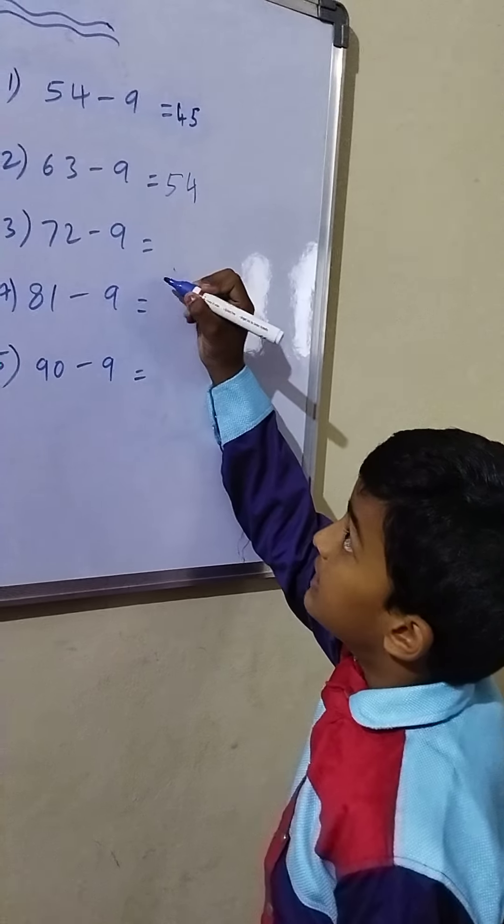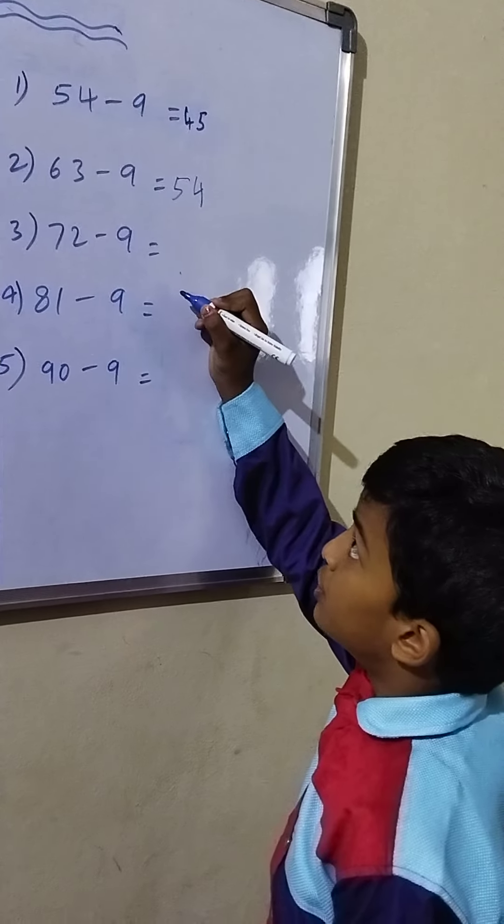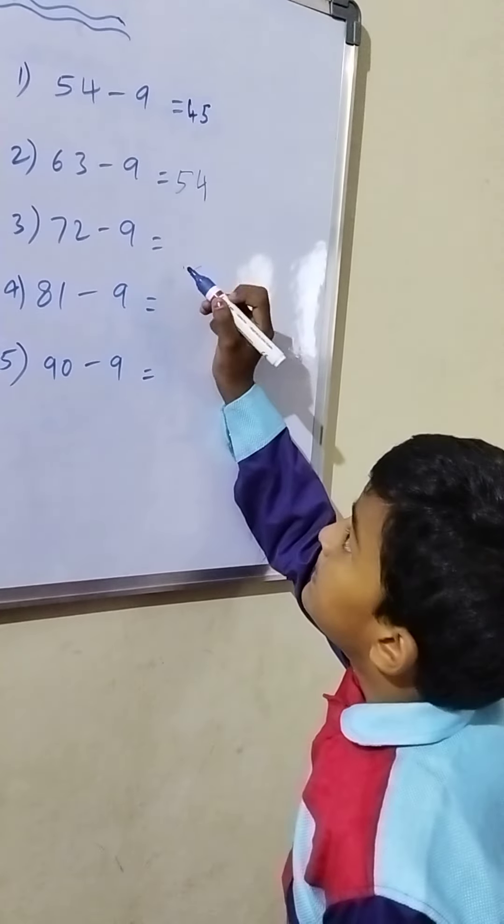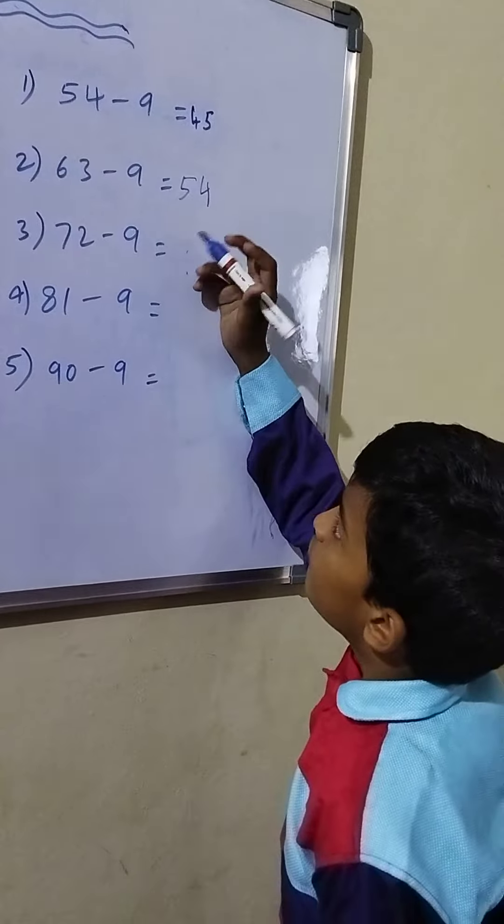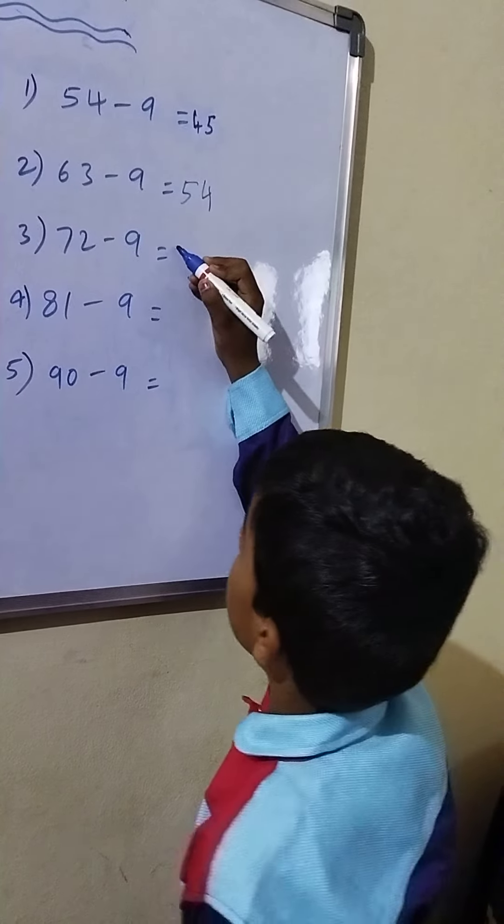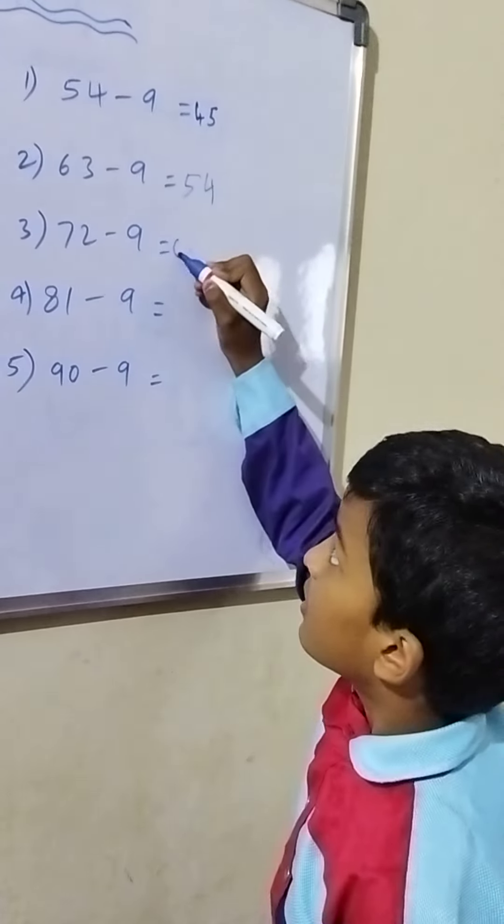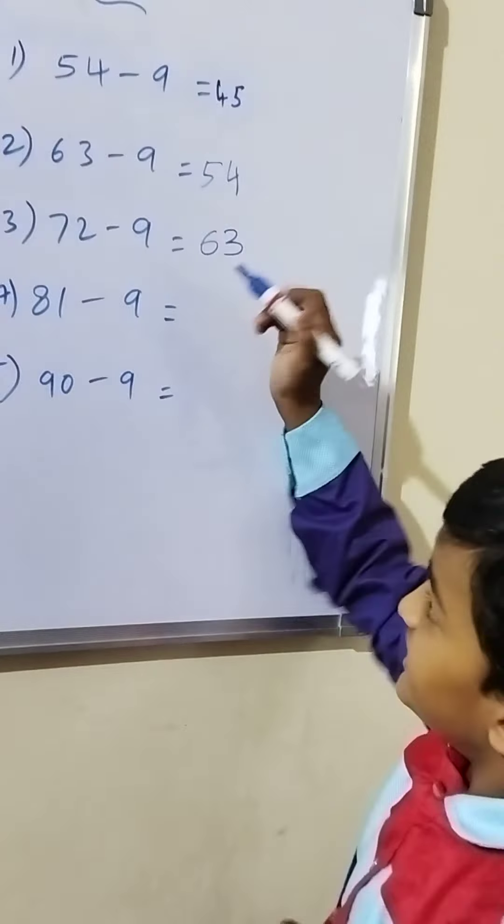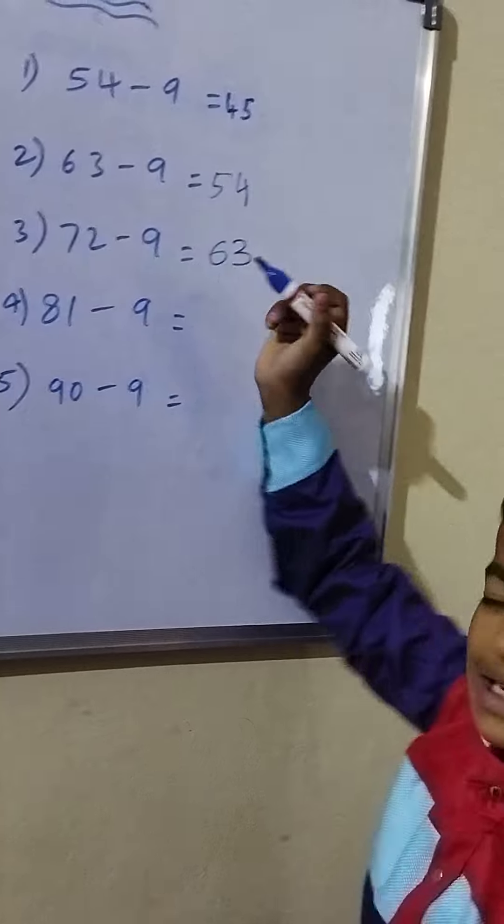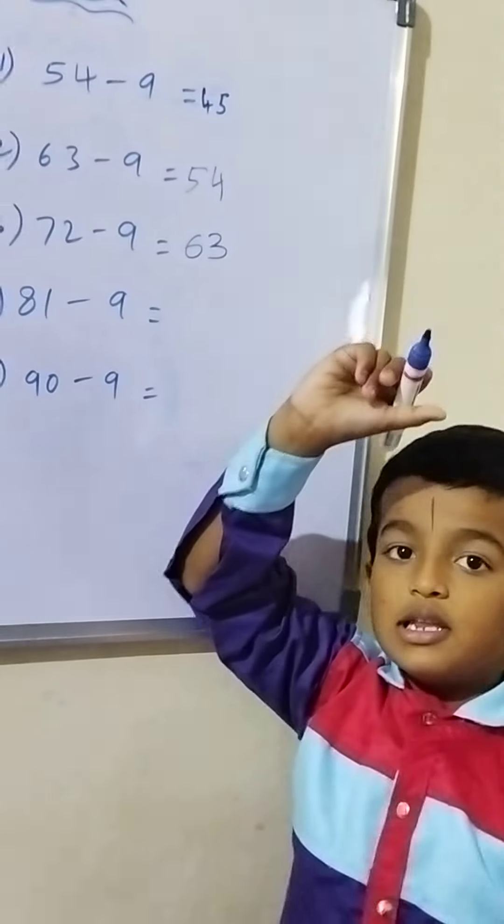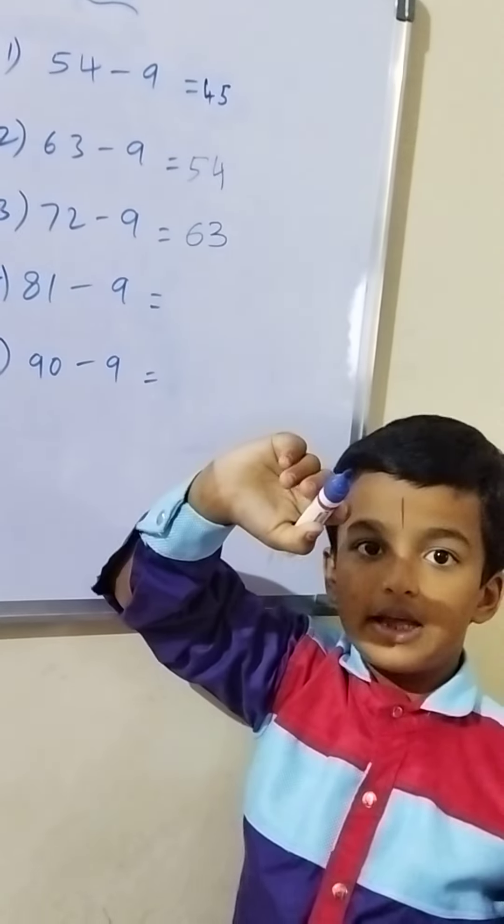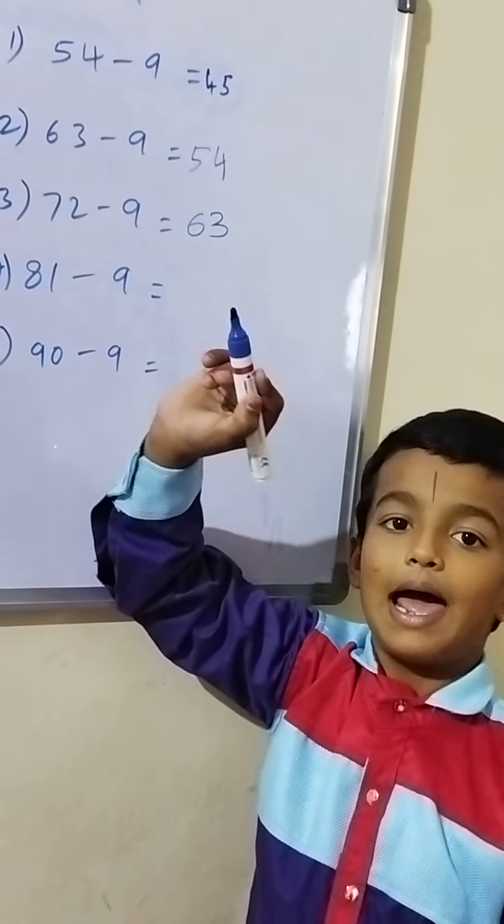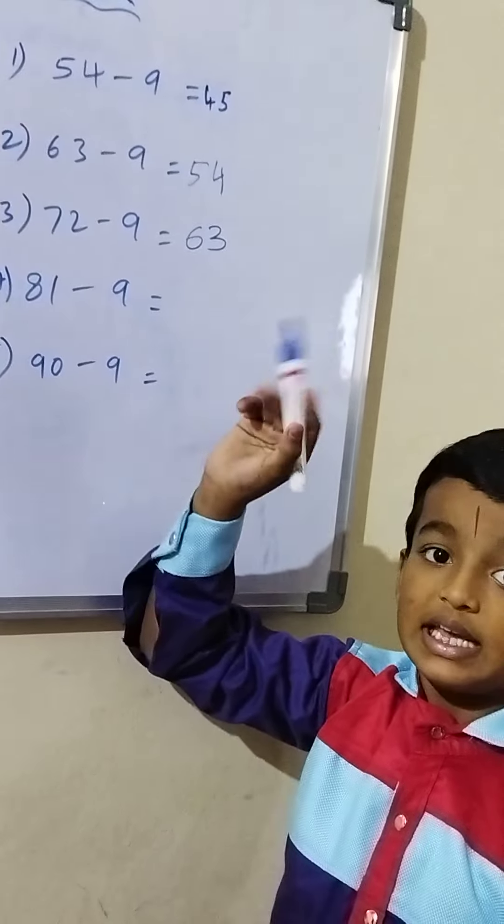72 minus 9: subtract 10 to get 62, then add 1 to get 63.